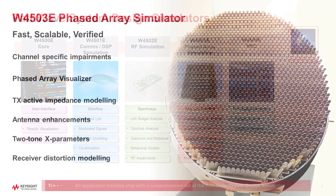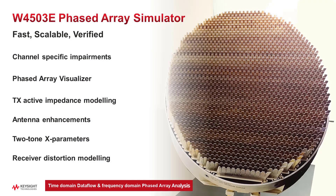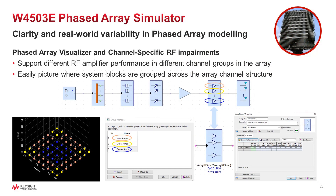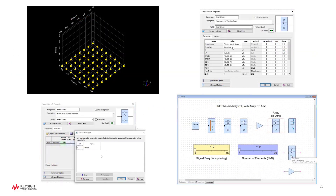For our W4503E Phased Array Simulator, we have introduced several new features which include Channel Specific Impairments, supporting amplifiers with different RF performance characteristics in different groups of channels in the array. We also have a new phased array visualizer which allows users to easily picture where groups of system blocks are located across the array channel structure.